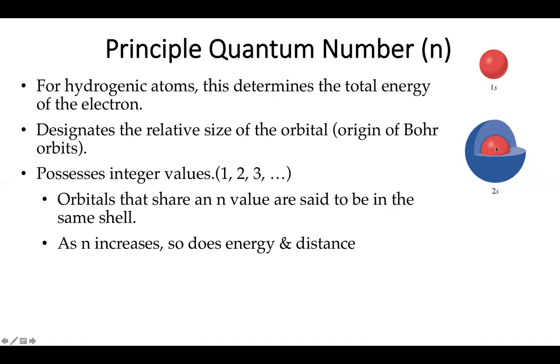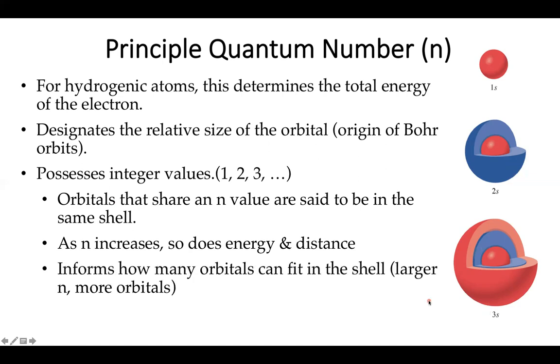As n increases, we're slowly introducing new nodes. We have some probability density inside that node and some outside, and this keeps going as we keep adding n. Another key feature is because the size of our orbitals increase as n increases, so will the number of different orbitals that can fit in.